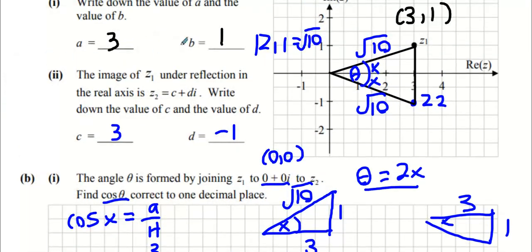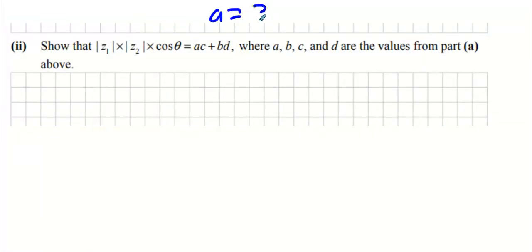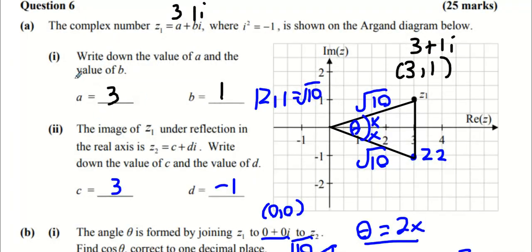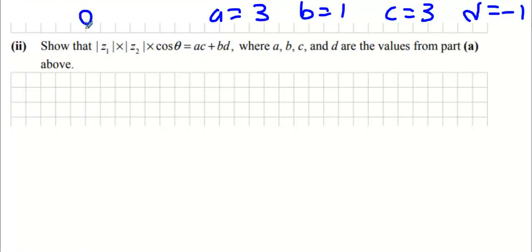So a is 3, b is 1, c is 3, and d is -1. We know a is 3, b is 1, c is 3, and d is -1 according to what's in this box right here. And cos θ is 0.8.